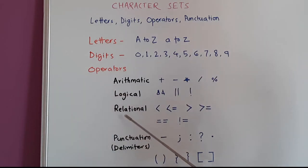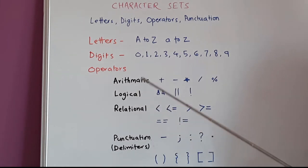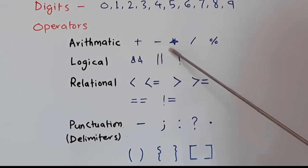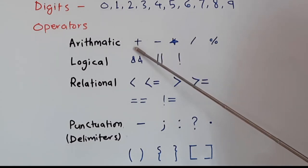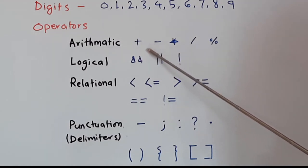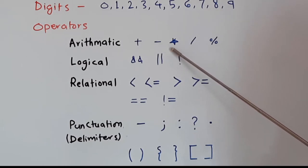And then there are operators: arithmetic, logical, relational, and punctuation marks. These are the arithmetic operators you can find on the keyboard: plus, minus, asterisk, forward slash, and percent. This is addition, subtraction, multiplication. We use asterisk as multiplication, forward slash as division, and percent is the modulo operator. It gives us the remainder of division.